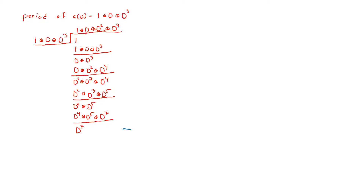This is the first time we get a remainder of the form D to the k — a single term. Previously we had remainders with two terms, and before that three terms. We were looking for a remainder with only one term, and when we find it, the period T equals k, which in this case is 7. So the period for this connection polynomial is 7.